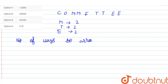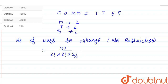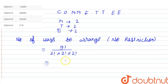Find the number of ways to arrange these letters with no restriction. The total number of letters in the word is nine. So the number of ways with no restriction equals 9! divided by the factorials of repeating letters: M repeats twice, T repeats twice, and E repeats twice — so divide by 2! × 2! × 2!.